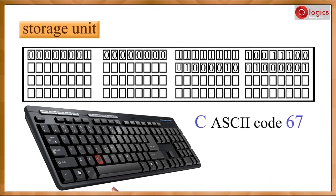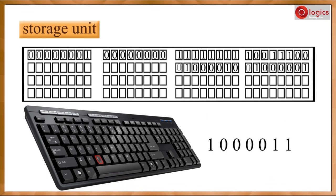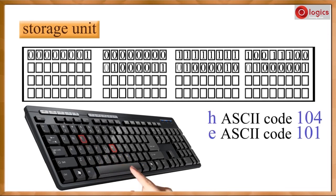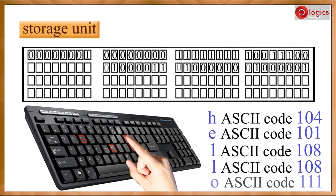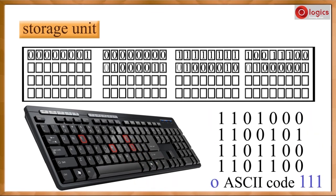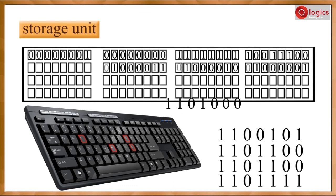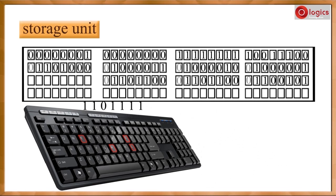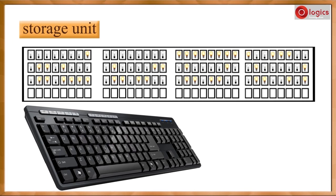The ASCII code for 'C' is sixty-seven. One byte of memory is required. I would like to store the word 'hello'. Hello — these are the binary numbers for the respective ASCII codes. This is how it is stored into the computer. If a bit is occupied with one, it is on. If a bit is occupied with zero, it is off.